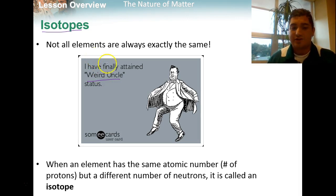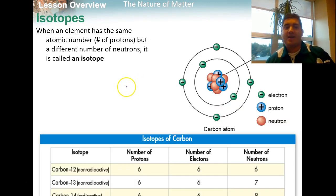So an isotope, what is it actually? It's not an uncle. It's when an element has the same atomic number, number of protons, but a different number of neutrons. And the best way to look at that is to actually look at an element.